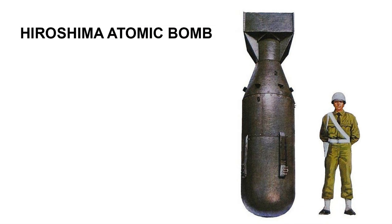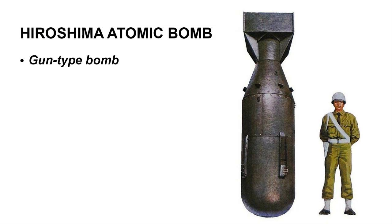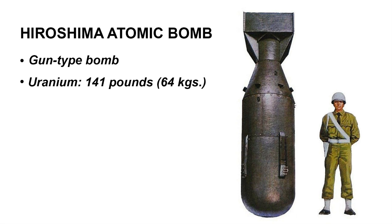The Hiroshima Atomic Bomb. It worked, very simply, by firing a subcritical projectile of uranium-235 into a U-235 target to form a critical mass to initiate a chain reaction and set off an explosion. The amount of uranium used totaled 141 pounds, or approximately 64 kilograms. This was all the weapons-grade uranium that the Manhattan Project had produced up to the summer of 1945. All of it went into this one bomb.